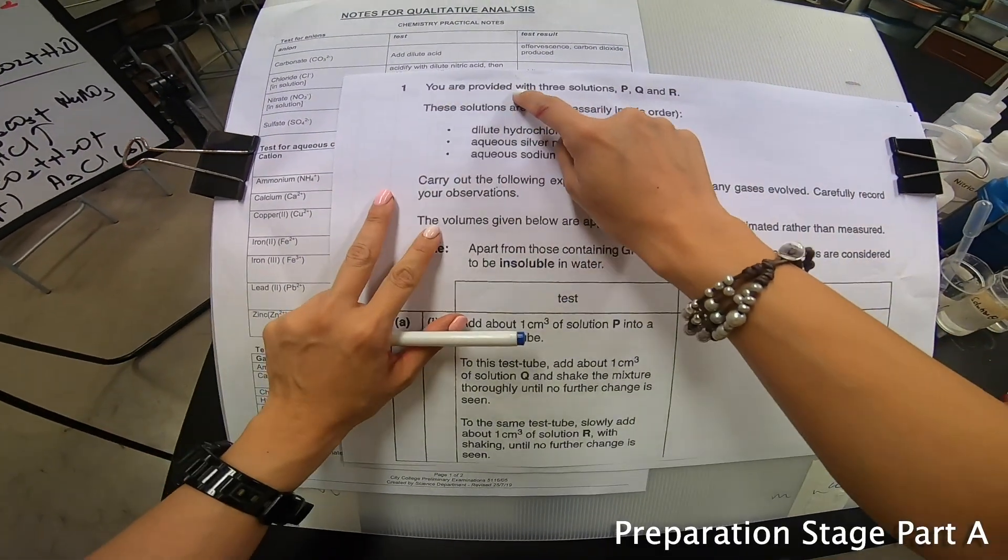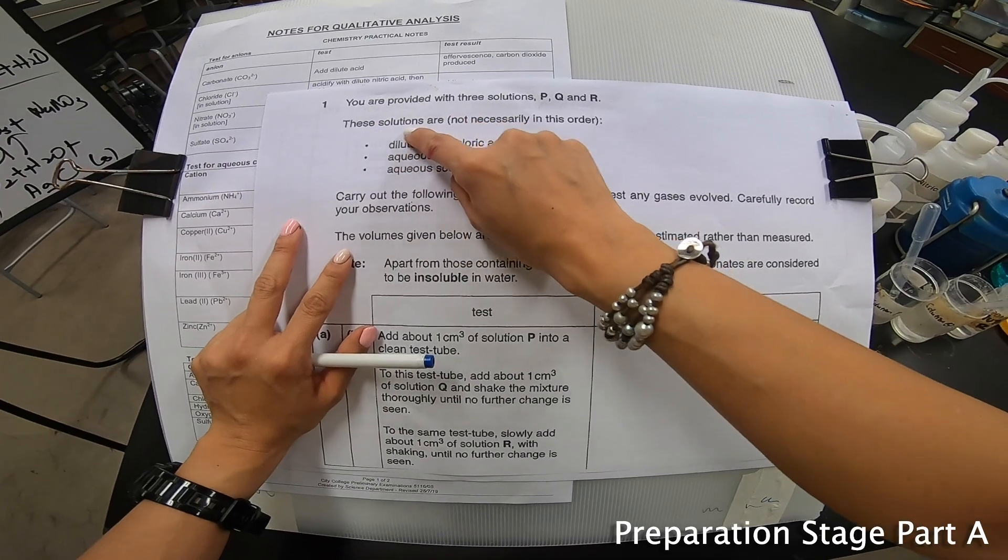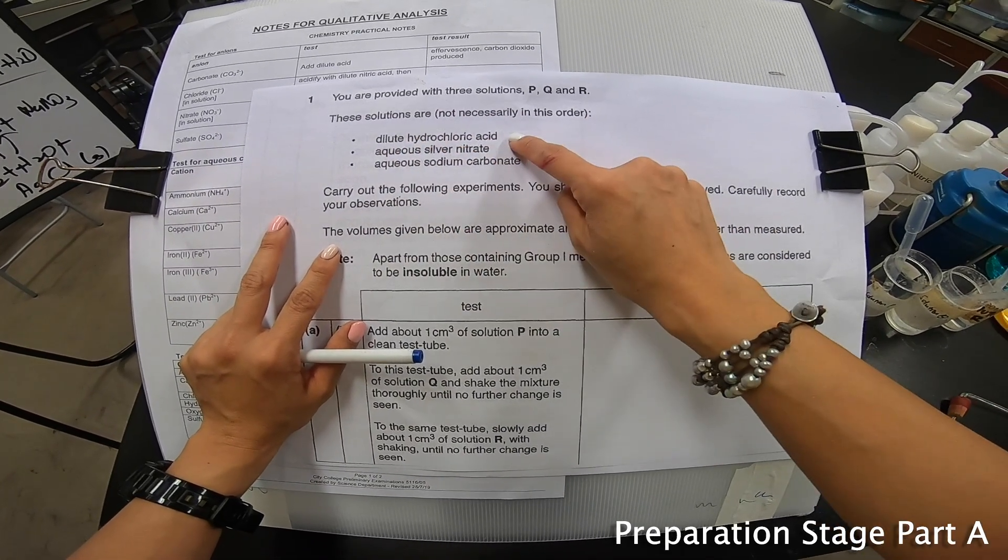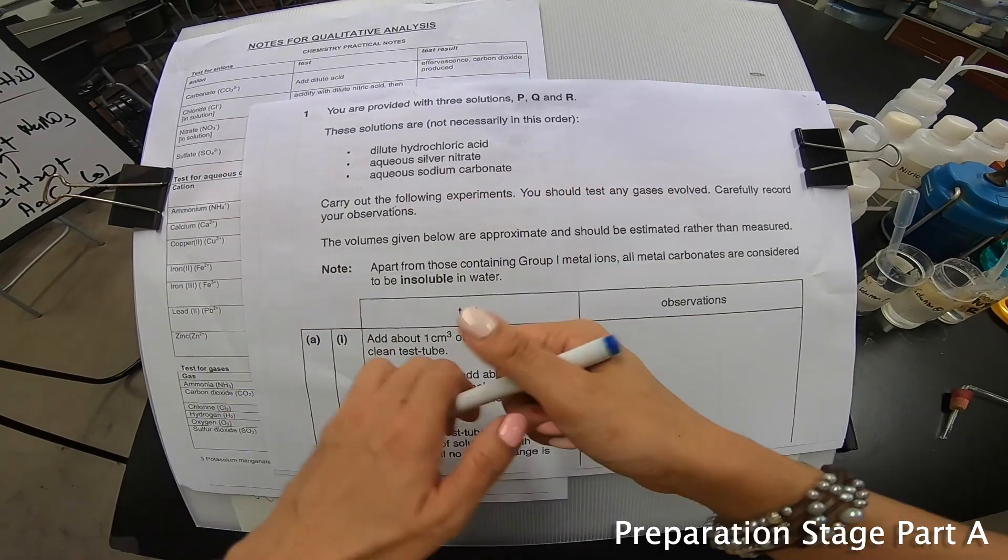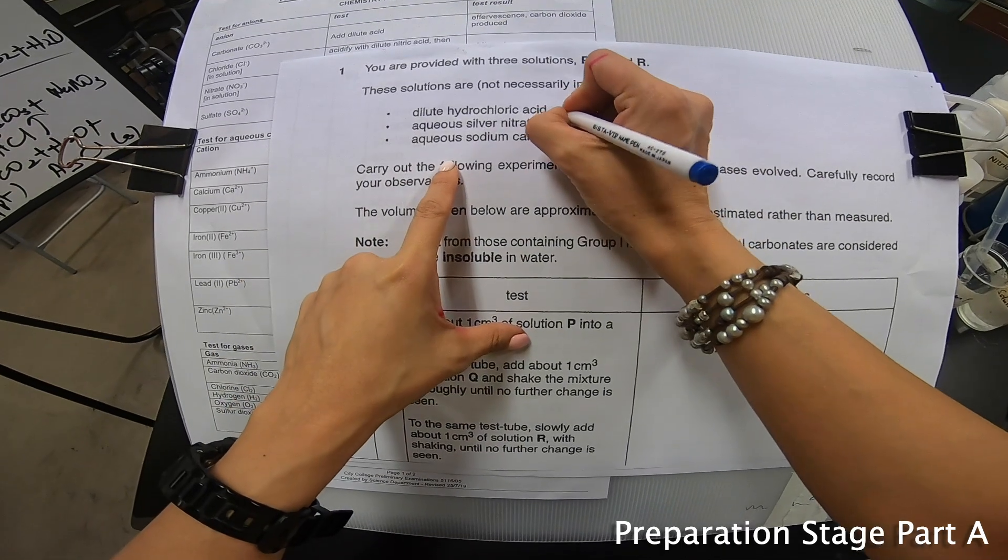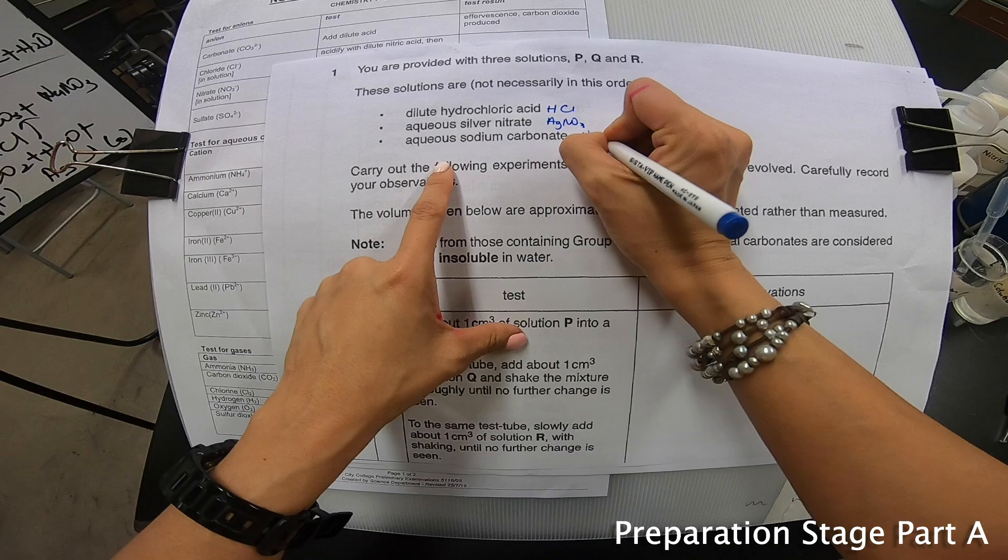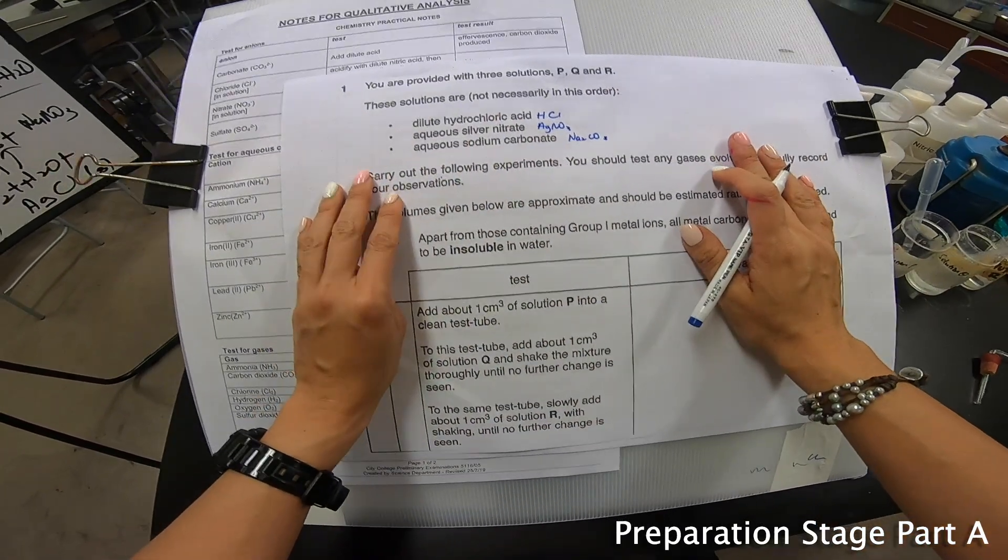Today we're going to go through 2016 GCEO level practical exam. Question number one says that you are provided with three solutions, P, Q, and R. And these solutions are not necessary in this order. You are given dilute hydrochloric acid, aqueous silver nitrate, and aqueous sodium carbonate. The fastest way that I will do this is I will write down the chemical formula, HCl, AgNO3, and Na2CO3.